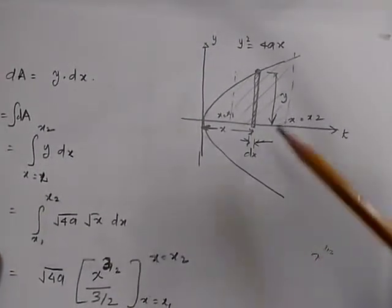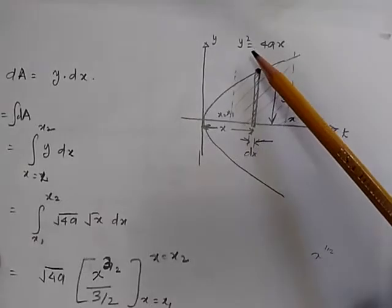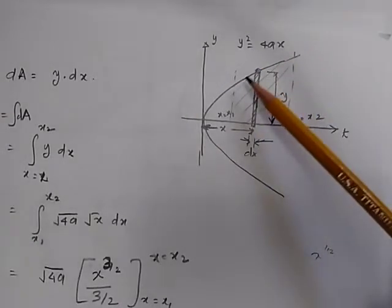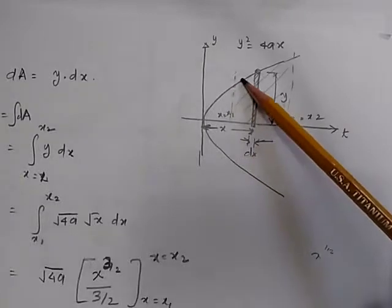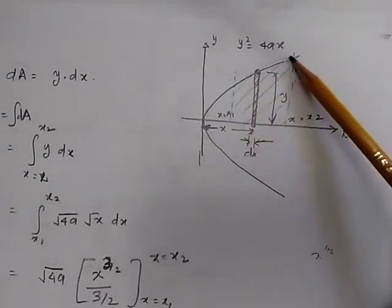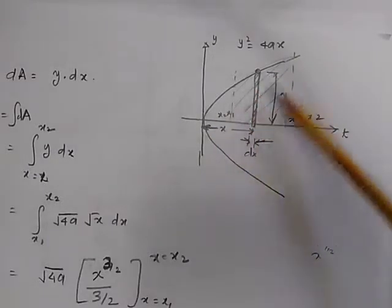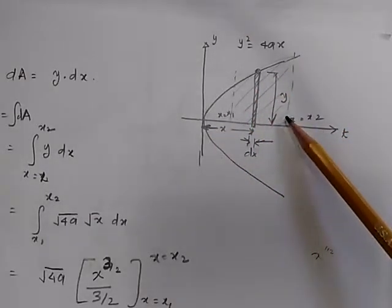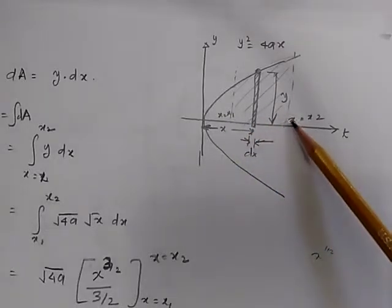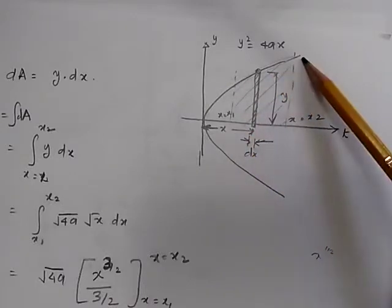This is a parabola. Its equation is given by y squared is equal to 4ax, and we are required to find out the area enclosed between this parabola and the x-axis — the area shown by the shaded space. We need to find the area between x equal to x1 and x equal to x2, the x-axis, and the parabola.